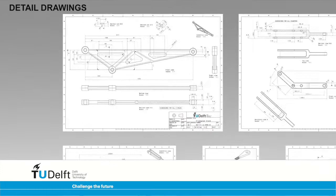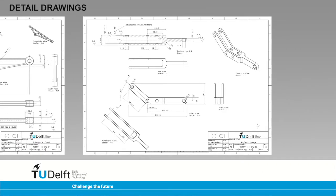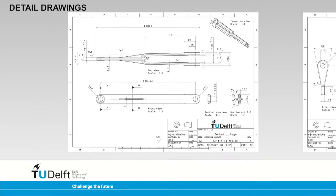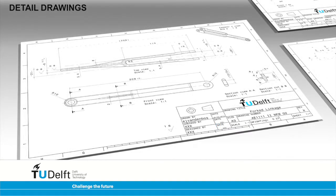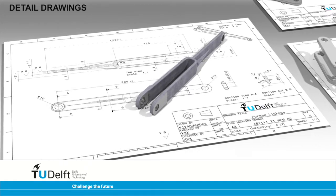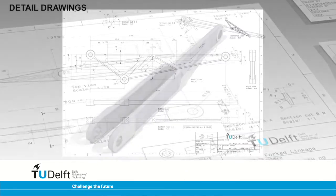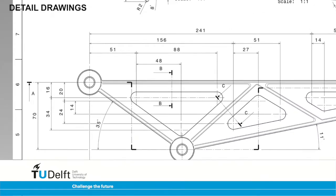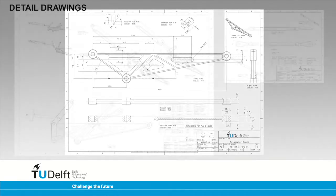Detail drawings always show a single part. All information needed to produce the part is present on the drawing. The geometry should be fully documented so the drawing is self-explanatory, in the sense that a craftsman in a tool shop can manufacture the part without having to ask any questions. Detail drawings typically contain a lot of dimensions, section views, and other items to document a geometry.